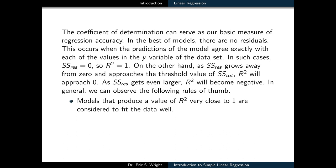In the best models, there are no residuals. This occurs when the prediction of the model agrees exactly with each of the values in the Y variable of the data set. In such cases, SS residual equals zero, so R squared is just one. On the other hand, as SS residual grows away from zero and approaches the threshold value of SS total, R squared is going to approach zero. As SS residual gets even larger, R squared will become negative.